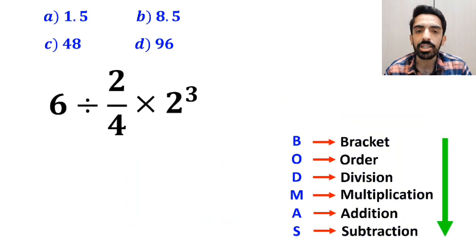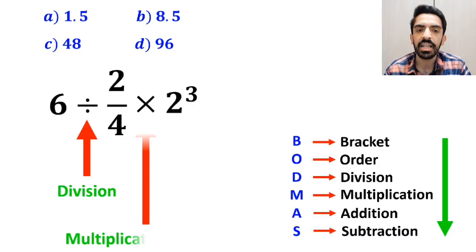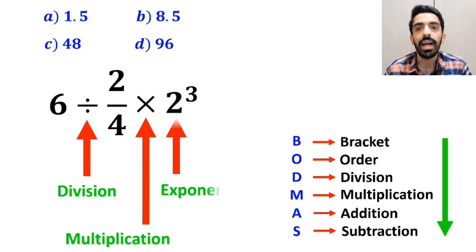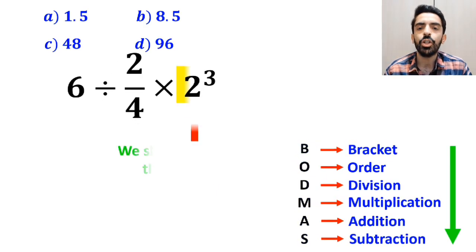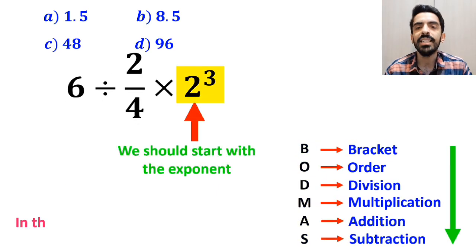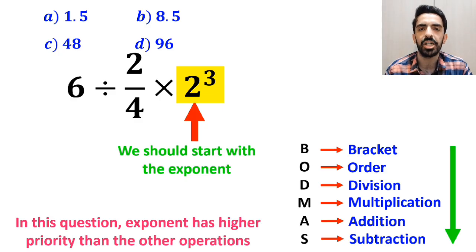As you can see on the screen, in this expression, we have a division sign, then a multiplication sign, and finally exponent. According to the BODMAS rule, we should start with the exponent, because in this question, exponent has a higher priority than the other operations.